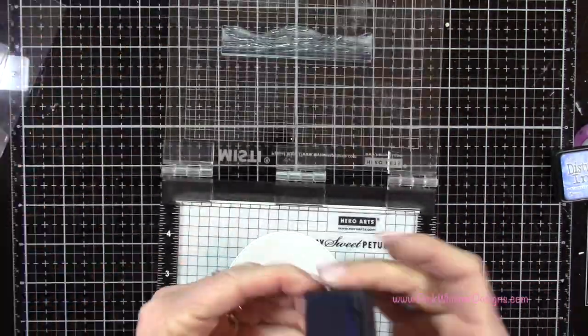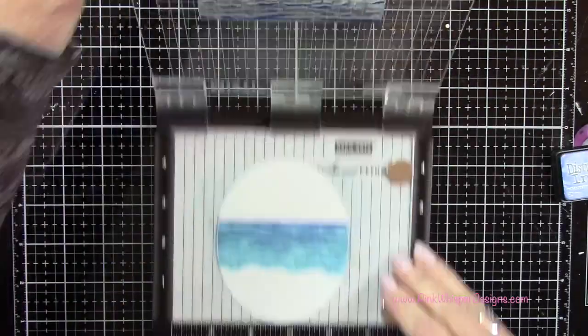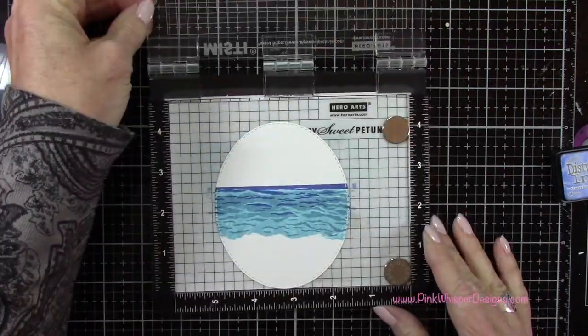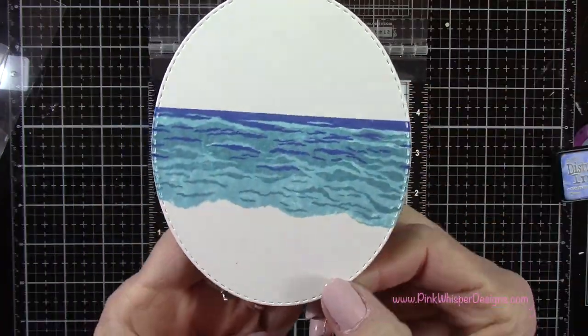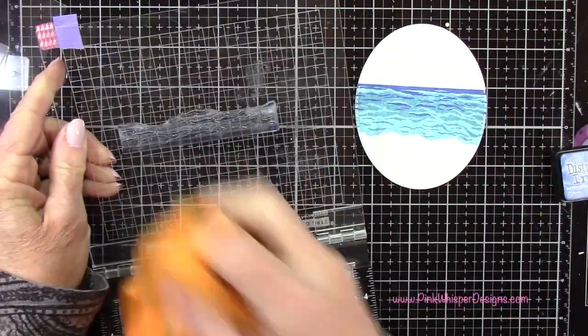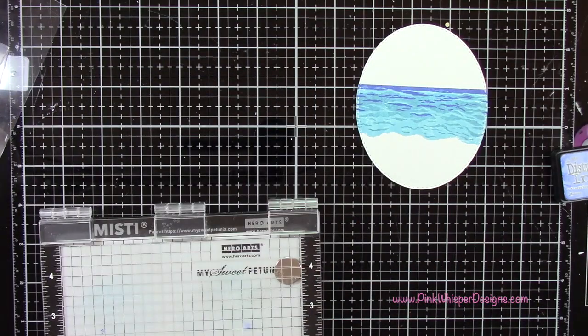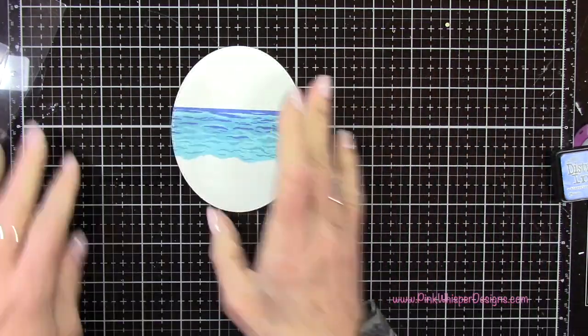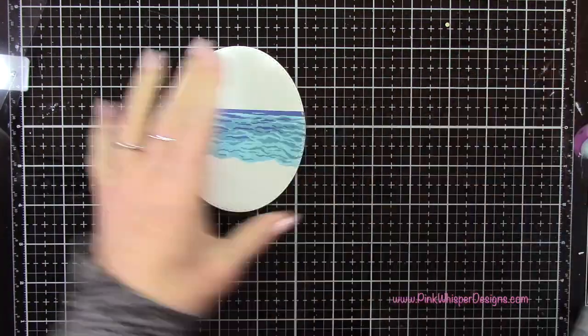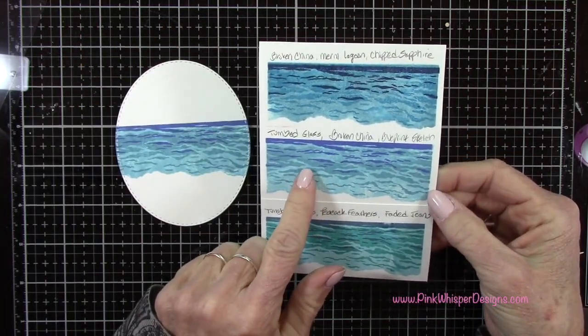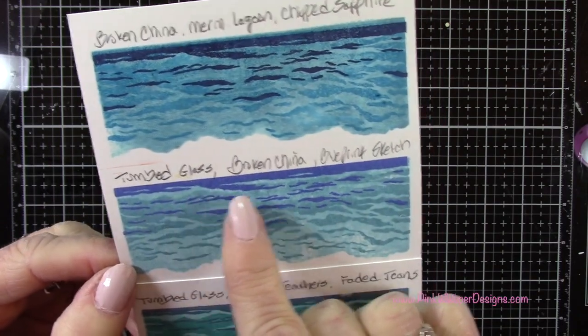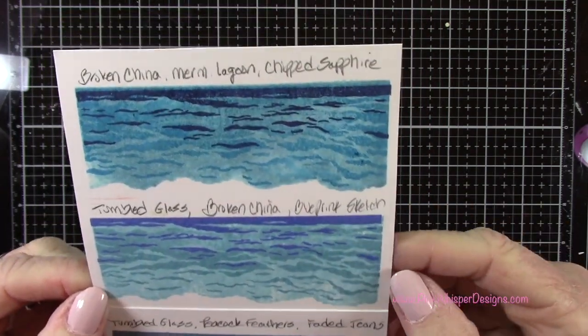Now you can see this beautiful layered water we have. I just think this is so beautiful and so easy to do. But I did want to show you that I played around with a bunch of other inks because this was the first time I was using this. I wanted to see what some other combinations were going to look like before I chose this one. That's the one we did today, that's the three that we used just now.